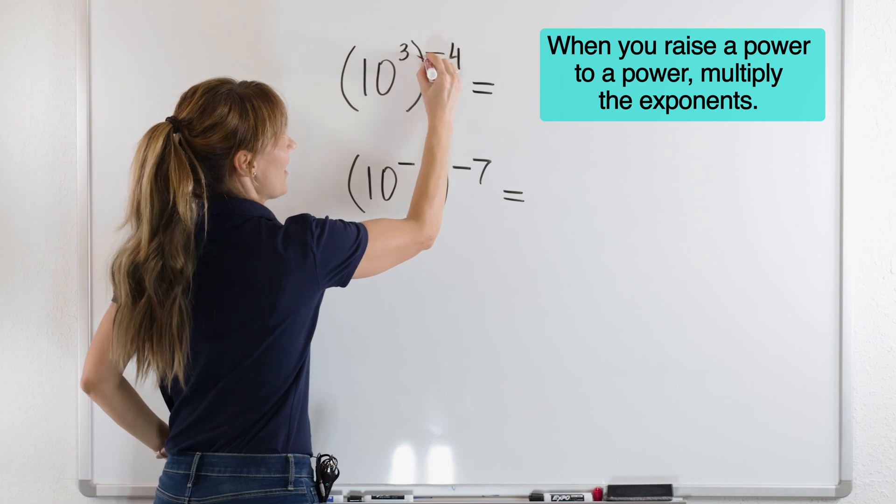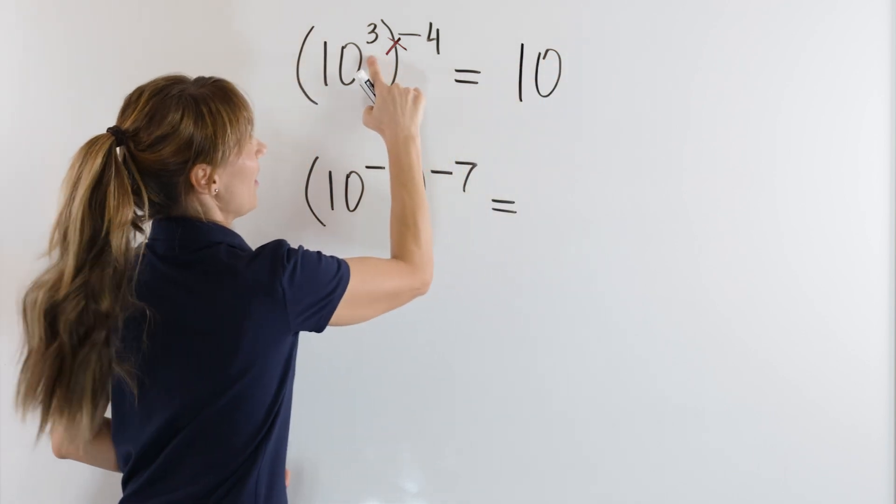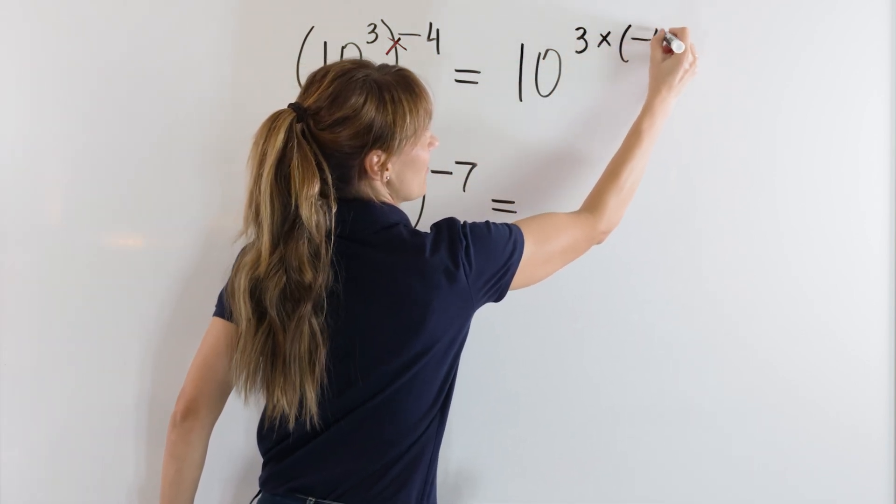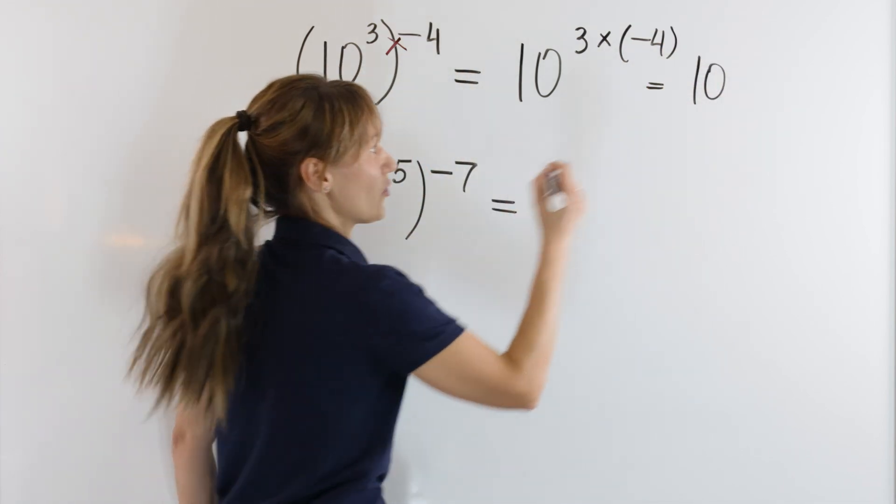Multiply the exponents. Keep the base 10 and multiply the exponents. 3 times negative 4. So, we will have 10 to what power? Negative 12.